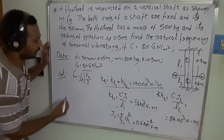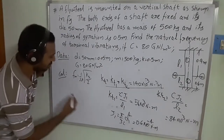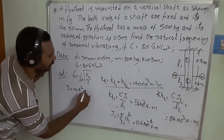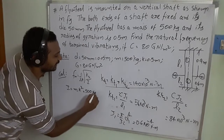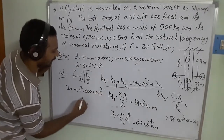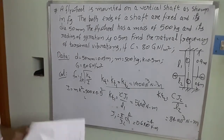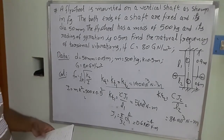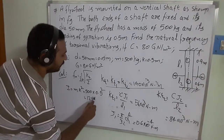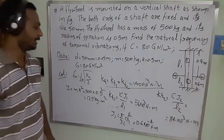Now the mass moment of inertia I = m × k², where m = 500 kg and k = 0.5 m. Therefore I = 500 × (0.5)² = 125 kg·m².